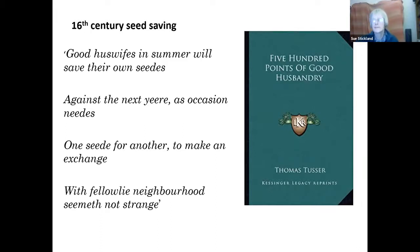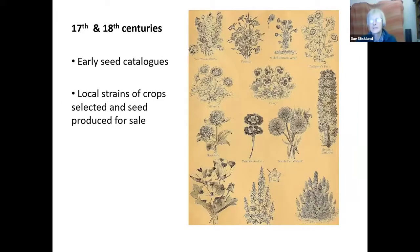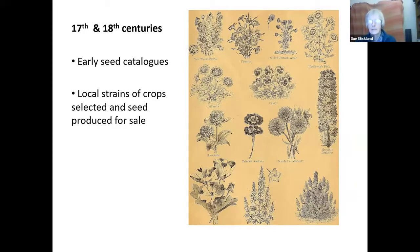Moving to the 17th and 18th century, specialist seedsmen began to set up. One of the earliest surviving catalogues is from William Lucas, based in London. It would seem quite basic today — you could get round turnips or long turnips — but you also started to get local strains of crops developed by market gardeners, like a Sandwich radish and Sandwich bean named after the Kent town. These catalogues were for wealthy customers in major towns; in the countryside, smallholders mostly still saved their own seeds.